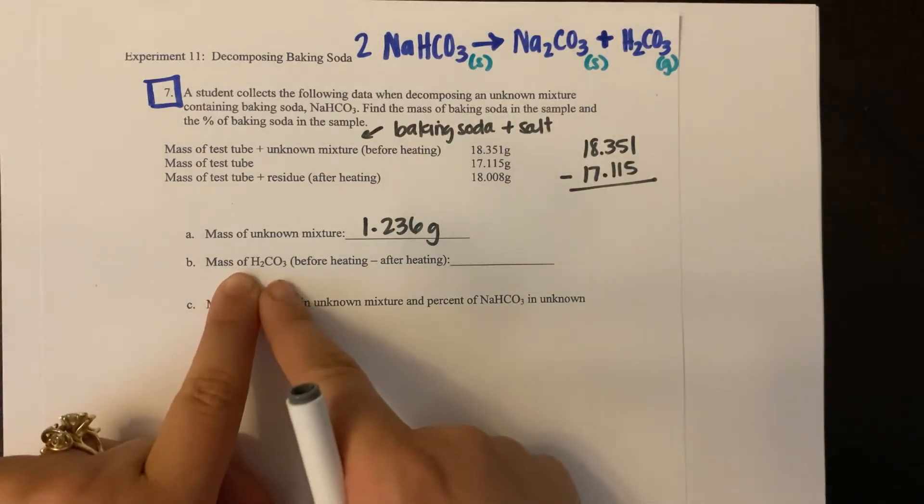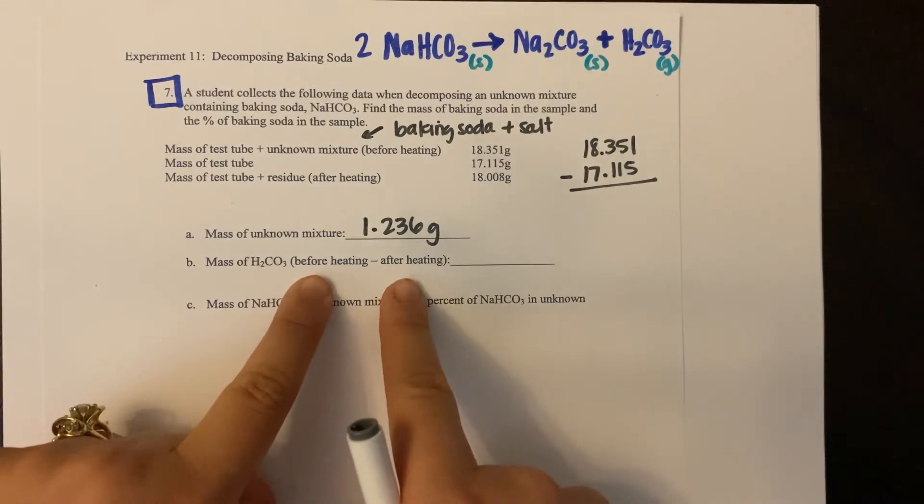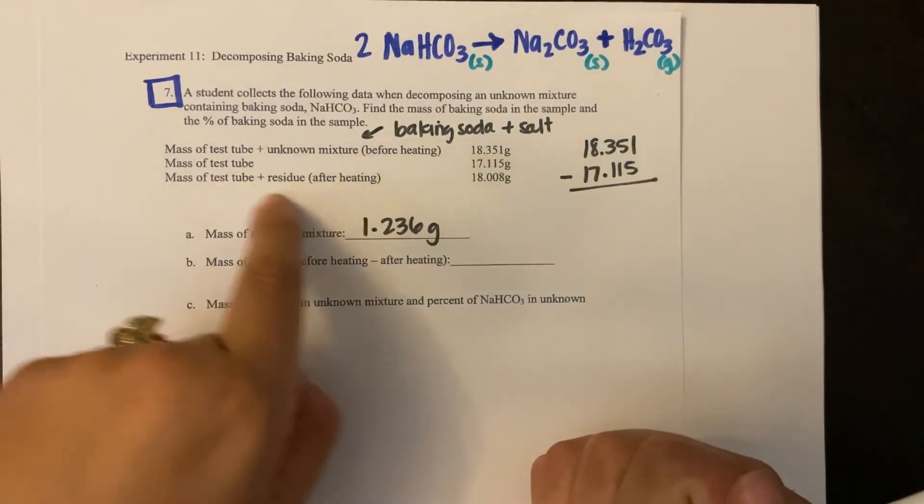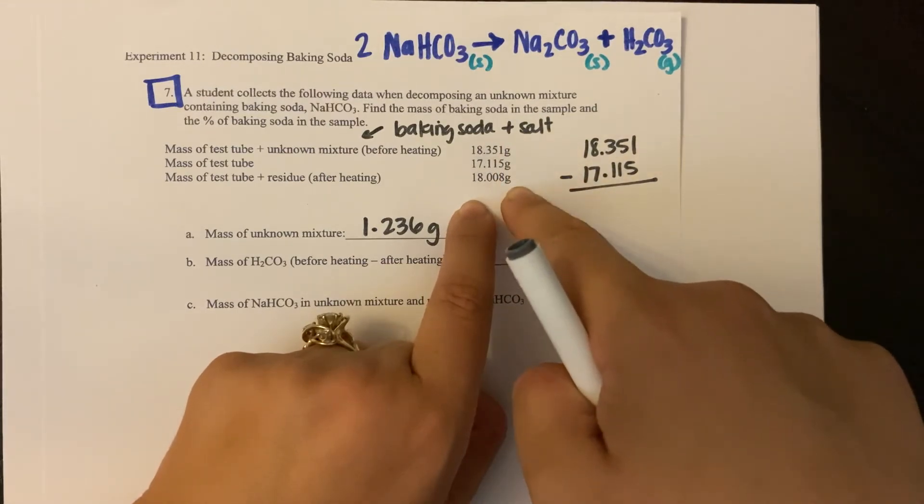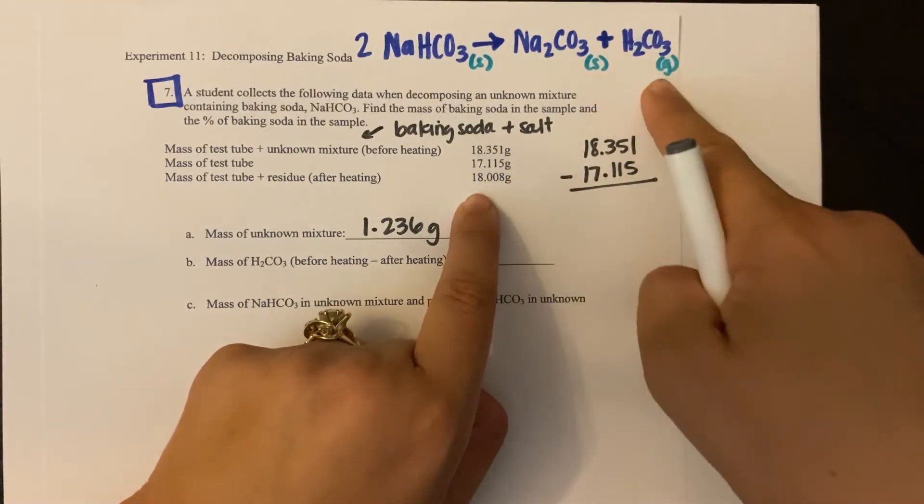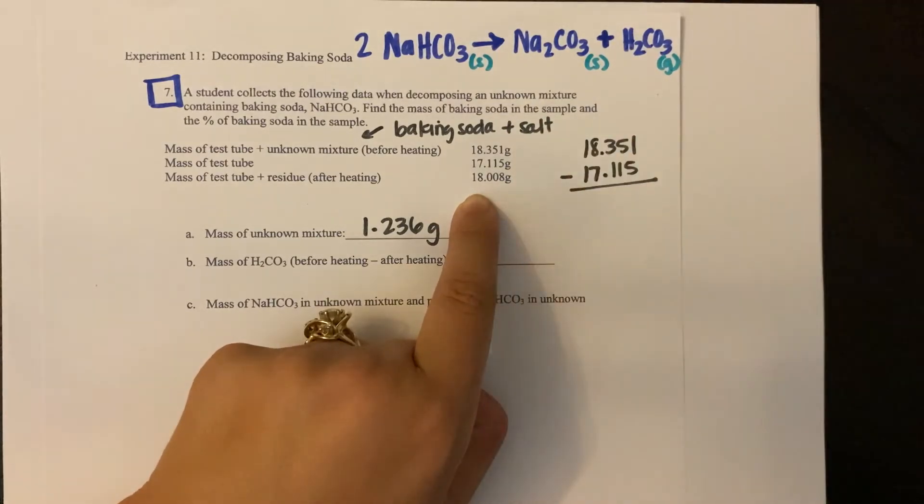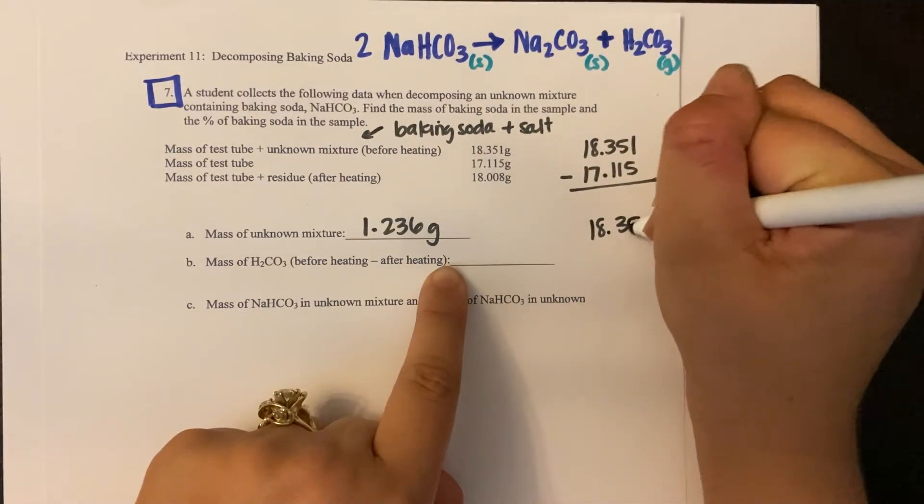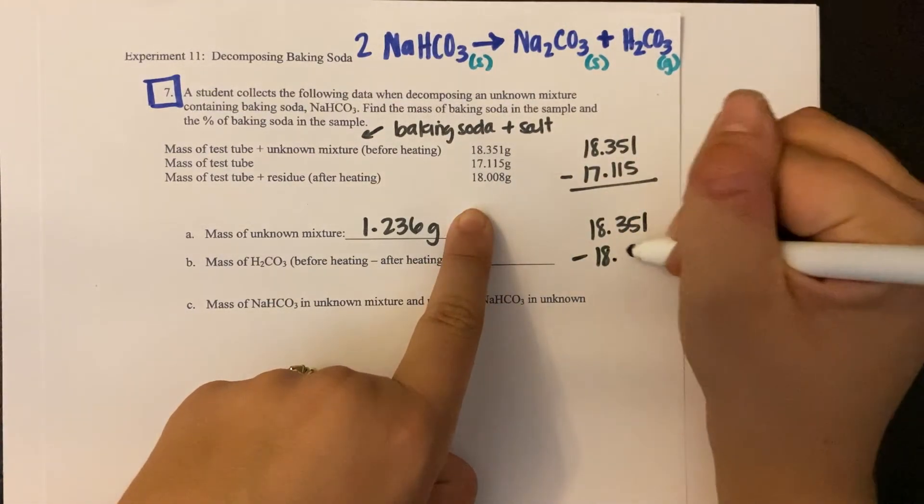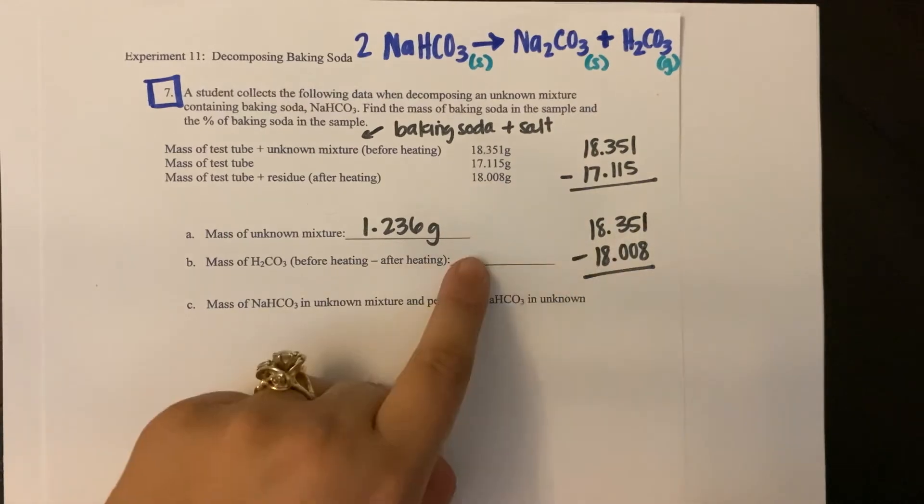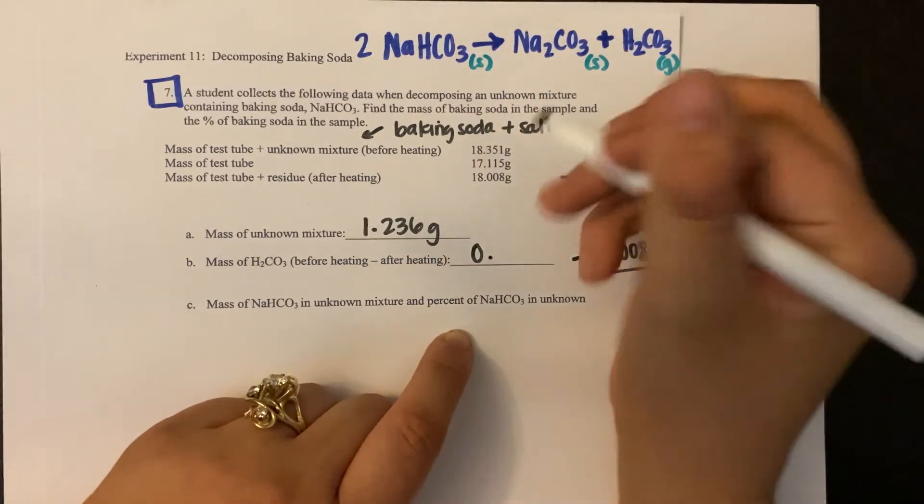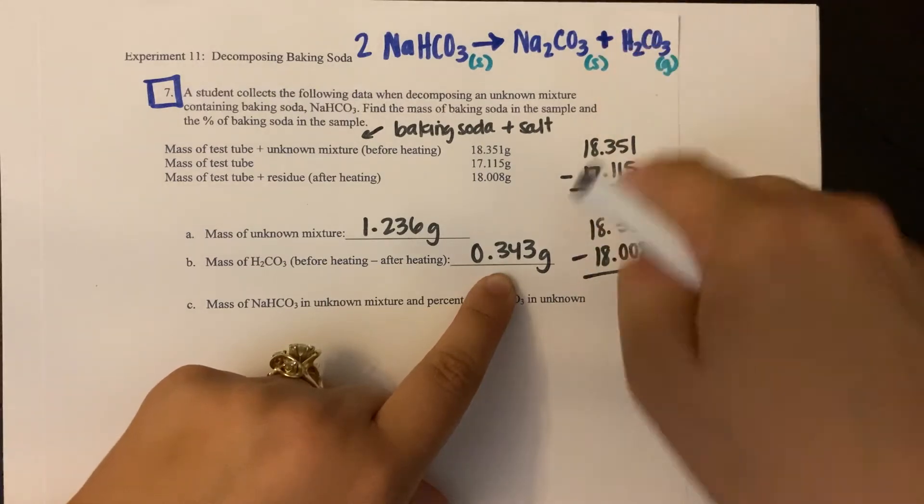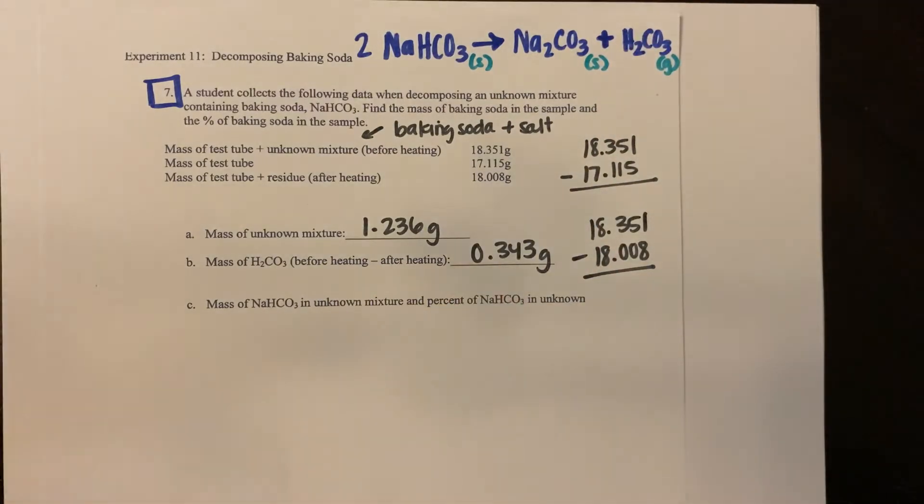Now it wants me to find the mass of the gas, and it literally tells you how to do that. So before heating minus after heating. So it's going to be my mixture before heating, subtracting my mixture after heating, because that's going to tell me the difference in masses. That's going to tell me basically what was the mass of this gas that went away, that went out of the test tube. So for this, I'm going to take 18.115, subtract 18.008 grams, and I would get the lovely answer of 0.343 grams. So I had 0.343 grams of carbonic acid leave my test tube.